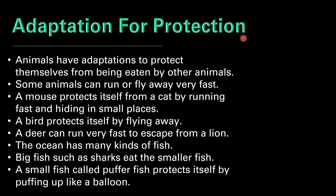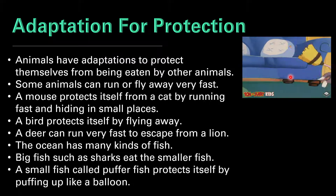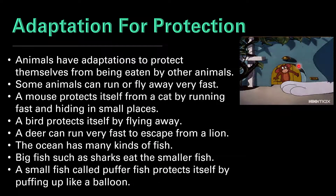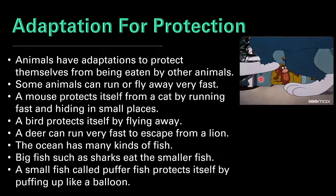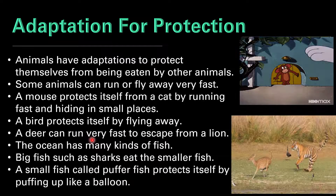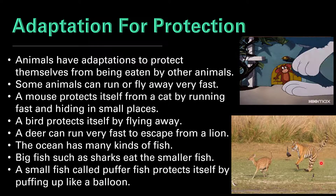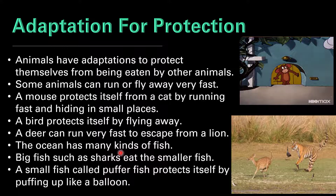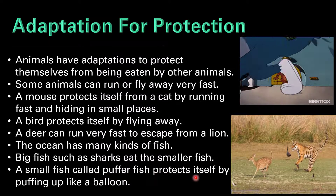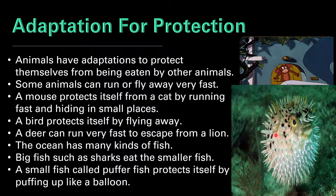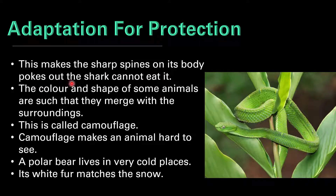Now let's discuss adaptation for protection. Animals have adaptations to protect themselves from being eaten by other animals. Some animals can run or fly very fast. A mouse protects itself from a cat by running fast and hiding in small places. As we can see in these images, the mouse is running fast and also hiding in a small place to escape from the cat. A bird protects itself by flying away. A deer can run very fast to escape from a lion or tiger. A small fish called the puffer fish protects itself by puffing up like a balloon, making the shark's spines poke out so the shark cannot eat it.